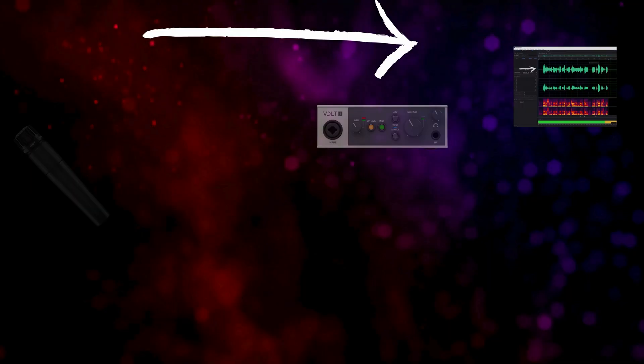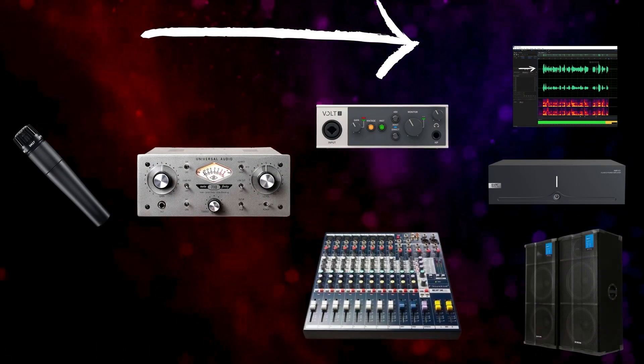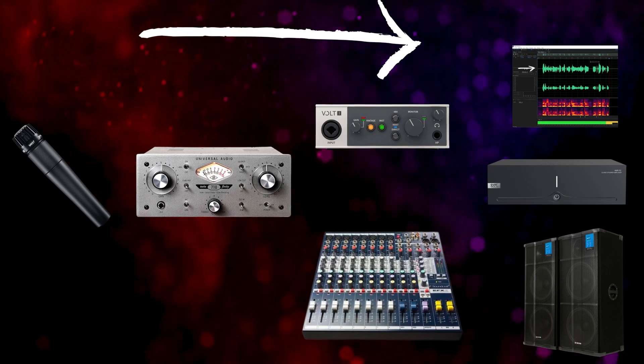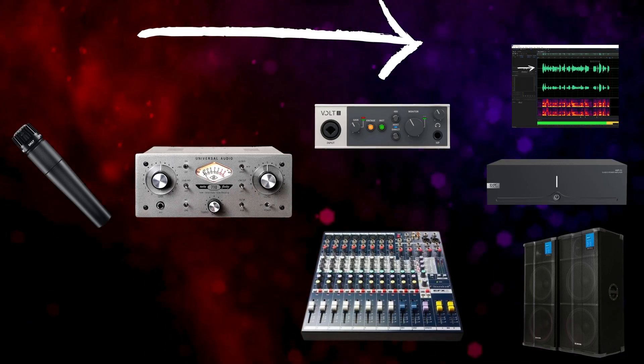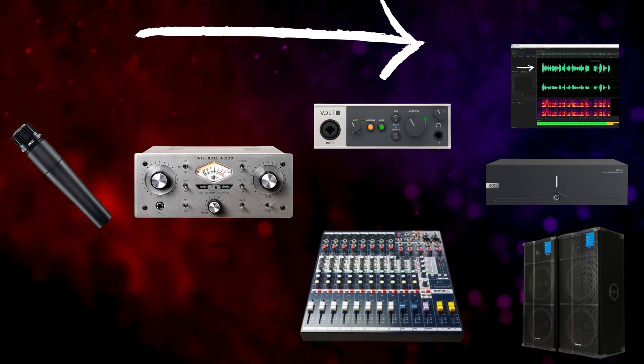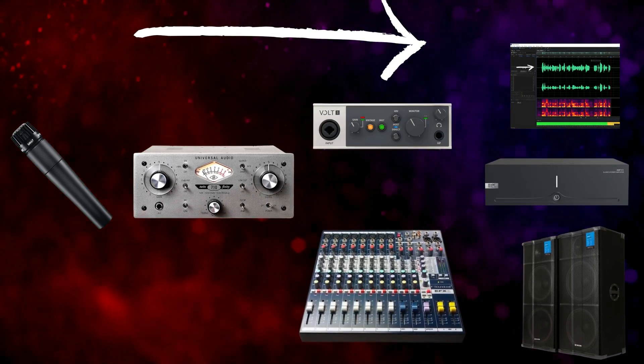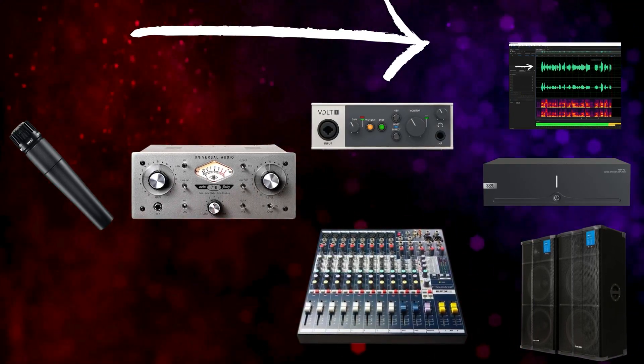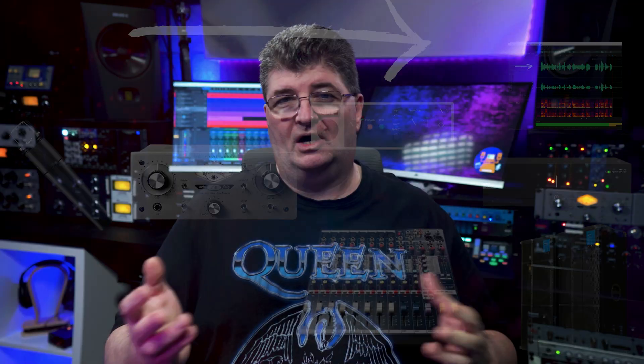A typical setup for recording or live sound with a microphone includes a mic level signal being sent to a preamp, which amplifies it before feeding it into a mixing console or audio interface, and then onto a DAW for processing or an amplifier to drive speakers for live sound.